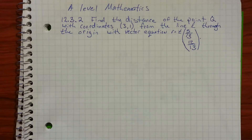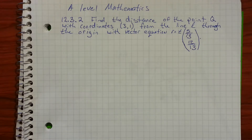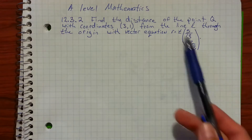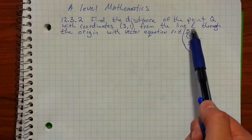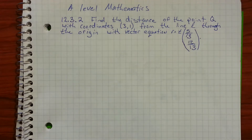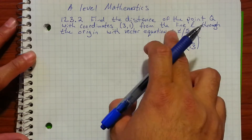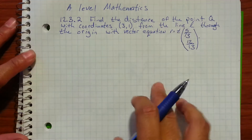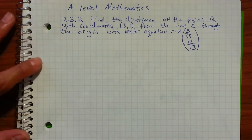Problem 12.3.2: find the distance of the point Q with coordinates (3, 1) from the line L through the origin with vector equation R equals t times the quantity (5/13, 12/13) — that is, t times (5/13 i plus 12/13 j). Since the line passes through the origin, the position vector before t is just (0, 0, 0), which is why it doesn't appear in the equation.